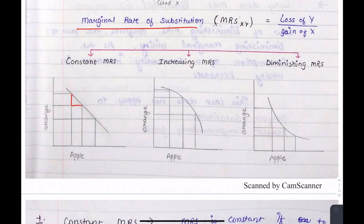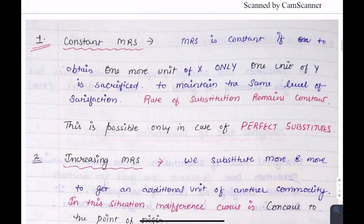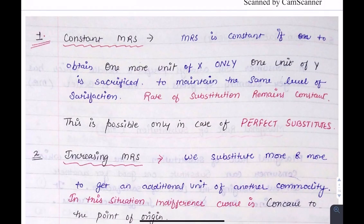In the constant MRS case, both values are equal. In the increasing MRS case, MRS is small initially and then increases — so the indifference curve is concave. In the diminishing case, MRS was more at first and then less. The same things are written here in the diagram.